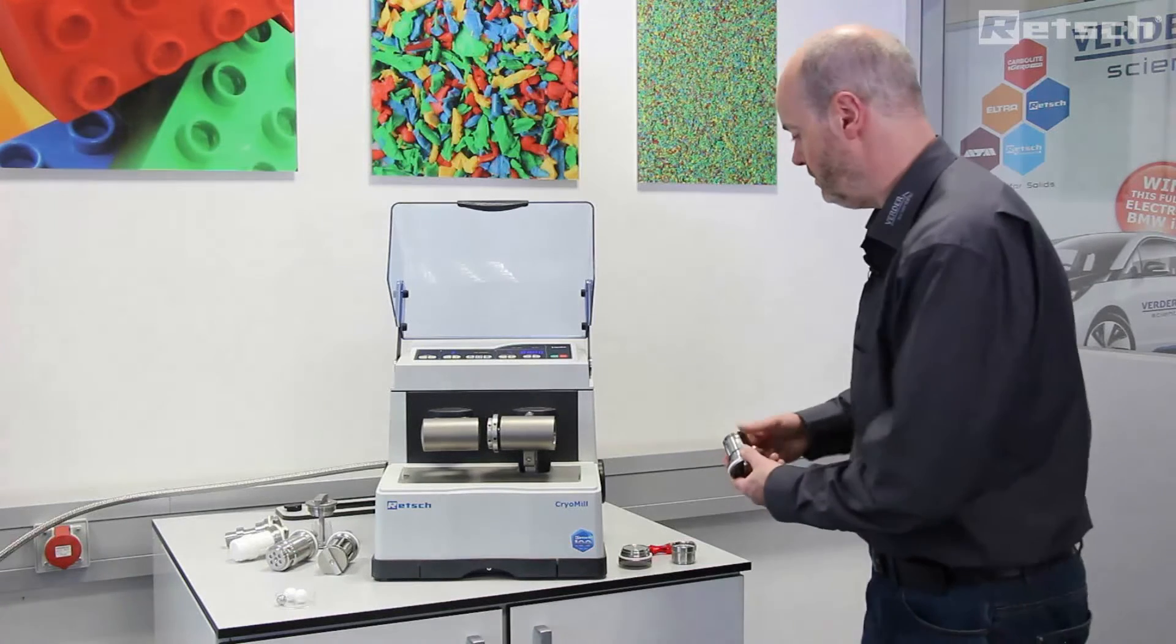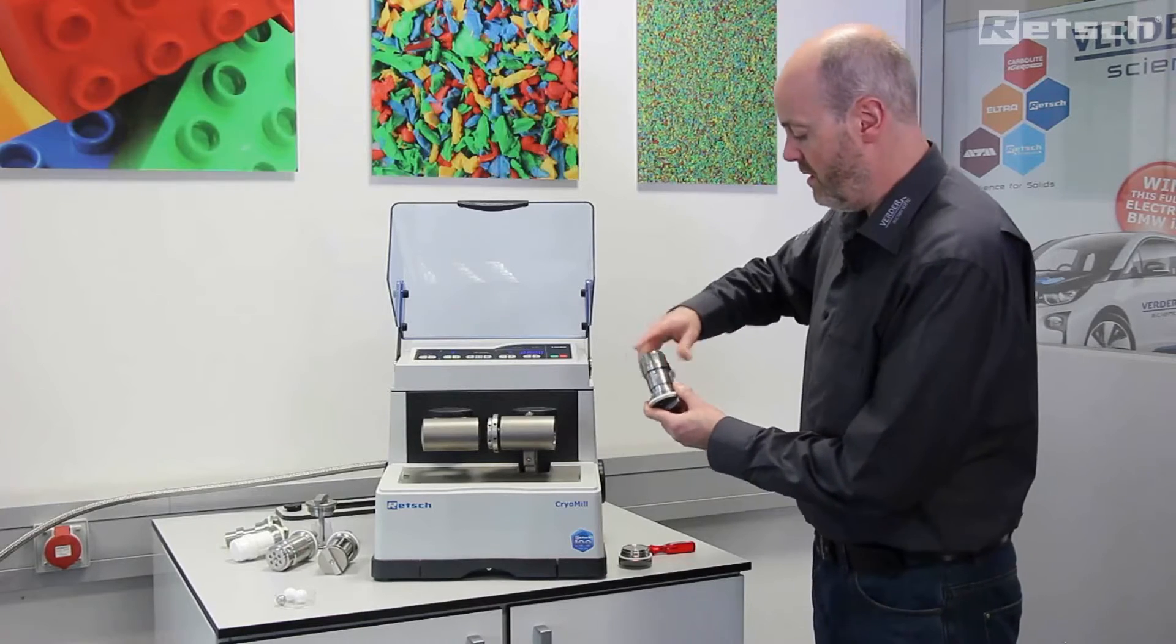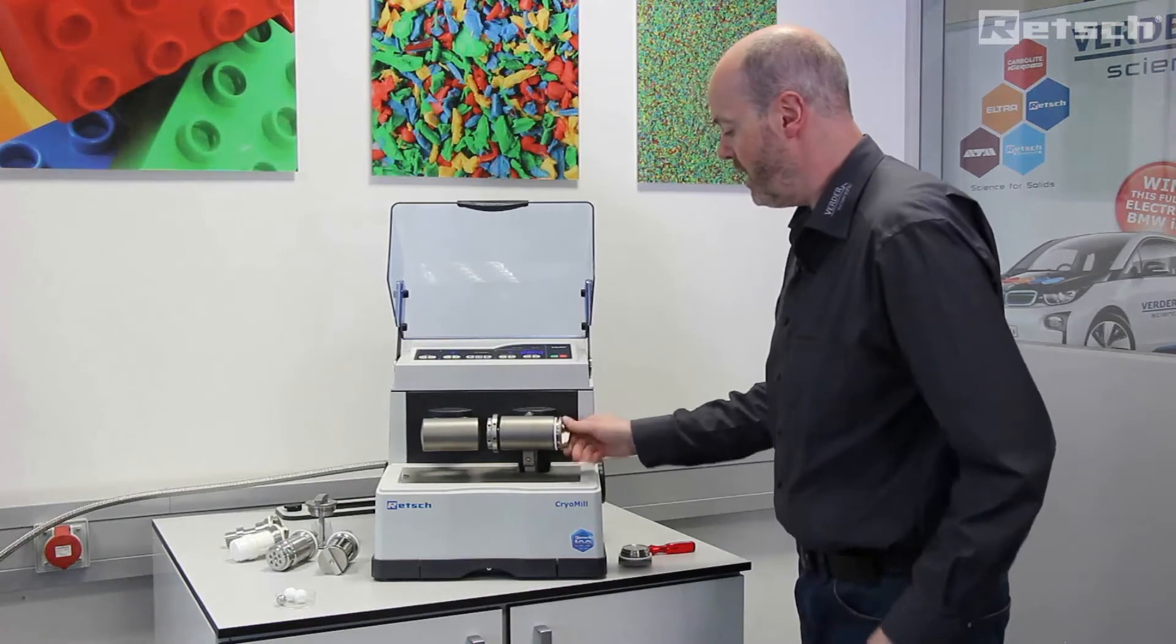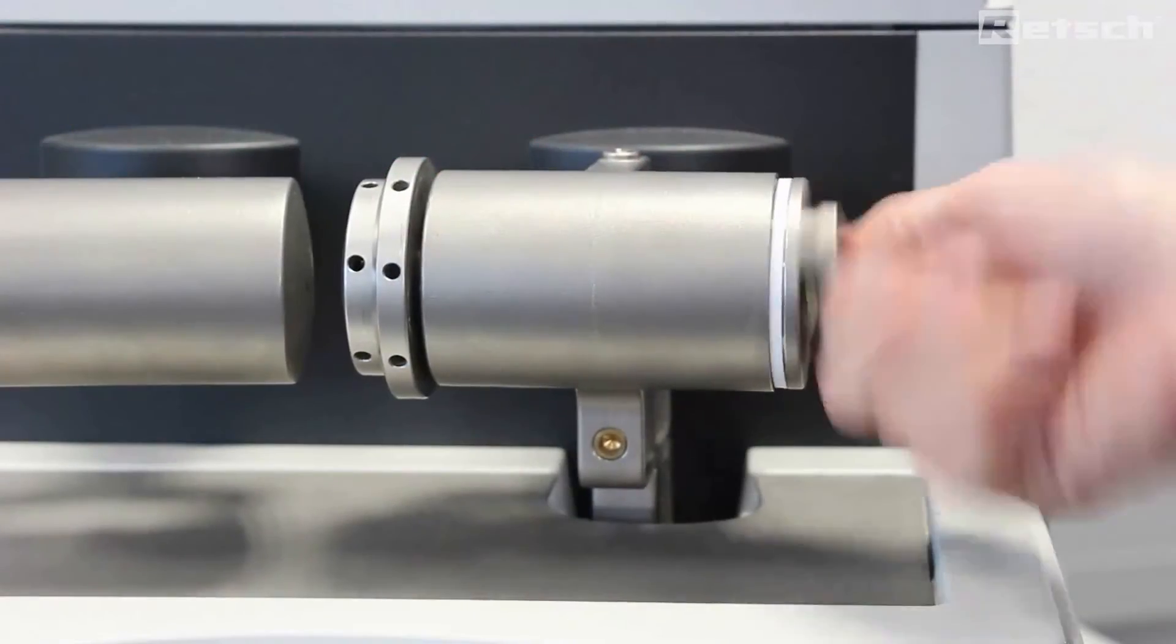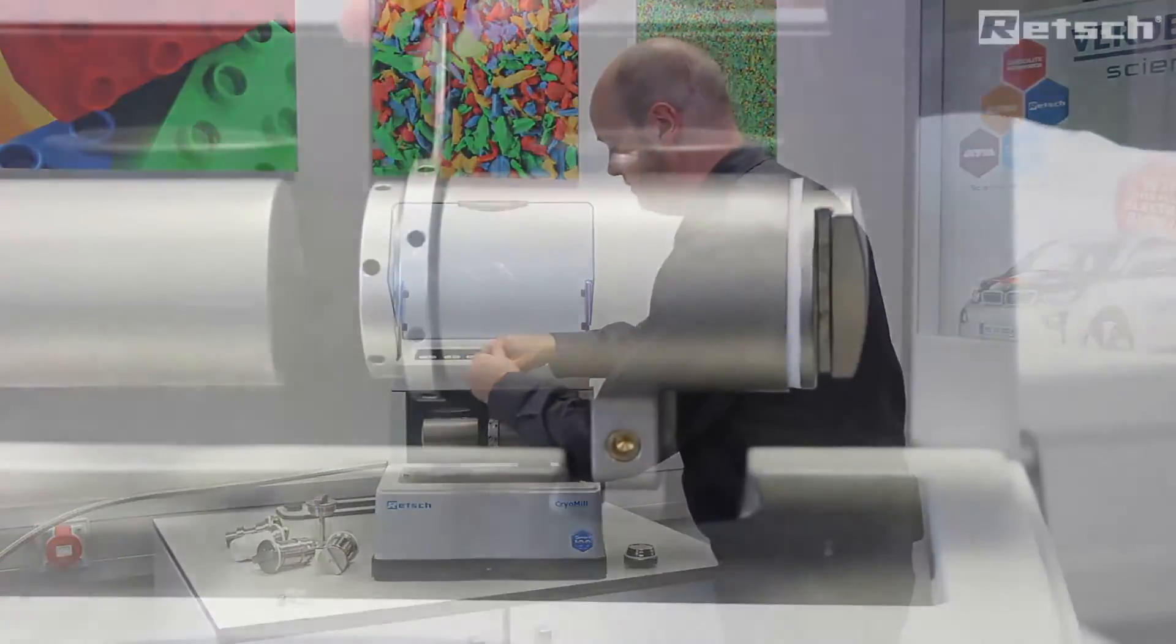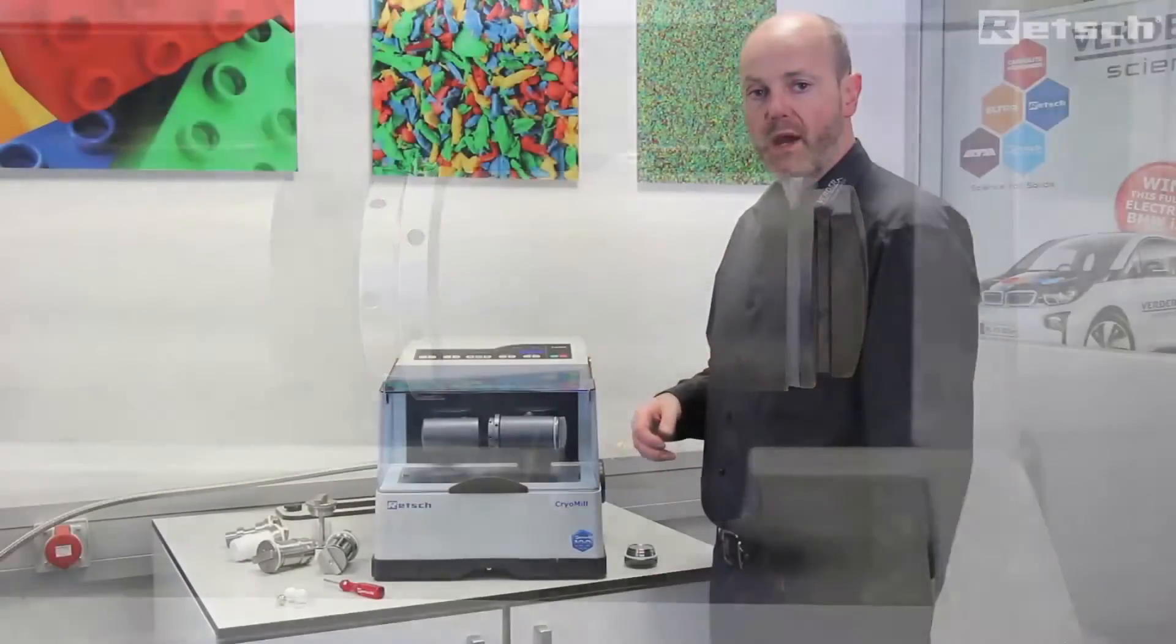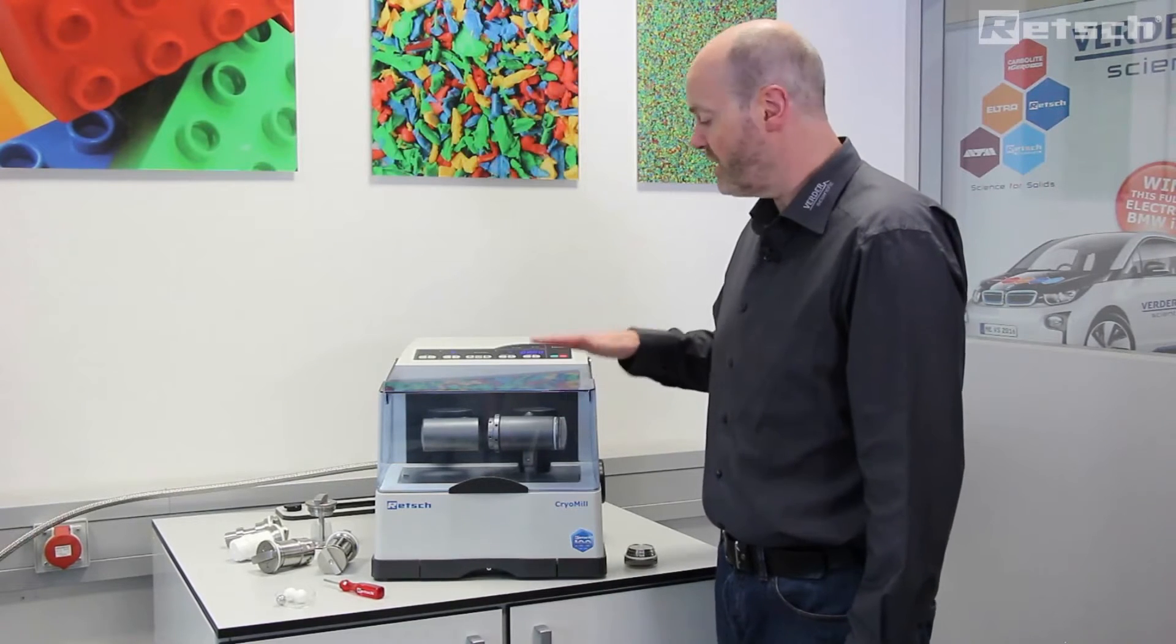The embrittled material is powdered. The jar can simply be inserted, tightened, and with the tool provided, securely locked.